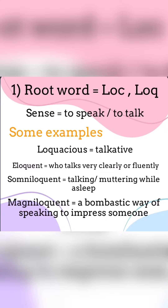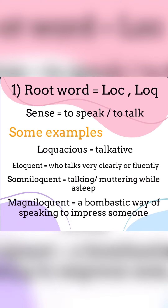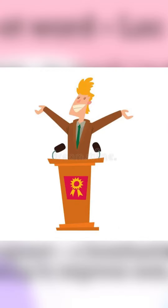Some examples are here. 1. Loquacious — that means talkative. 2. Eloquent — means one who talks very clearly or fluently.